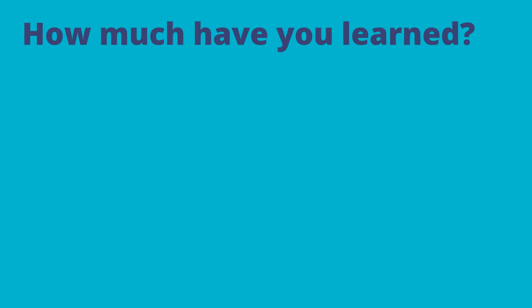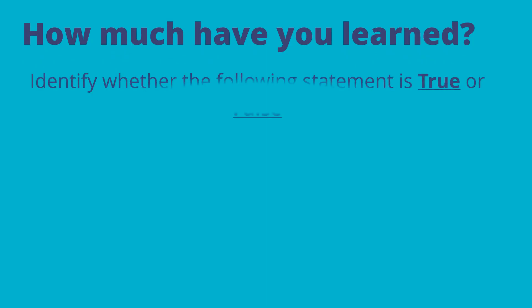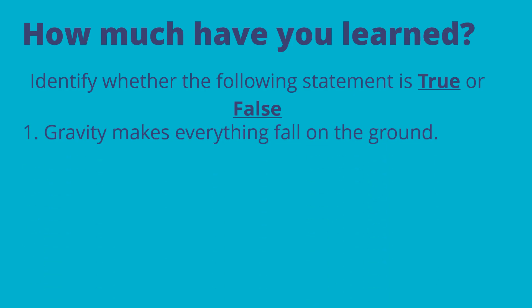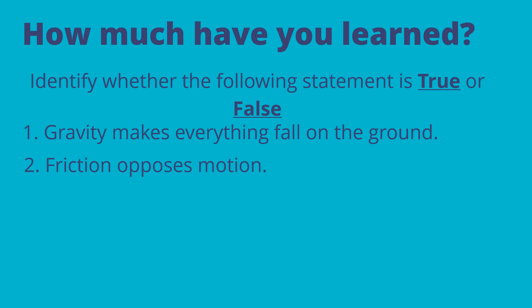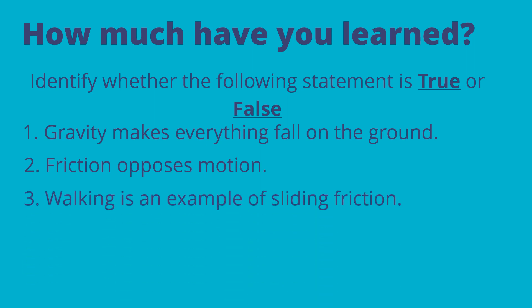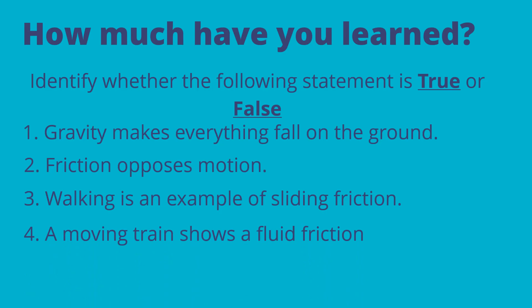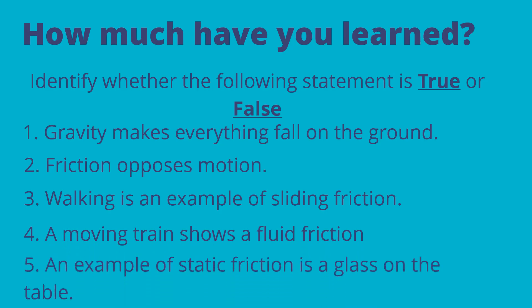Let me see how much you have learned. Identify whether the following statement is true or false. Number one: gravity makes everything fall onto the ground. Number two: friction opposes motion. Three: walking is an example of sliding friction. Four: a moving train shows fluid friction. And five: an example of static friction is a glass on the table.